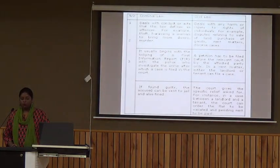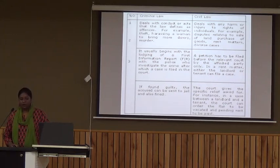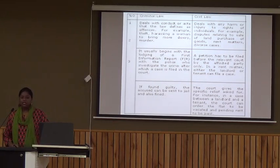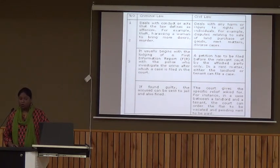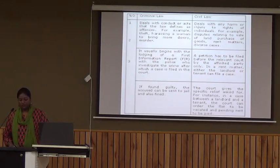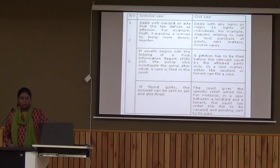In criminal law, the first procedure is to go to the police station, file an FIR, and after lodging the FIR the investigation begins. The police then file a charge sheet in the court, and if the person is found guilty, they will be sent to jail or fined. In civil law, a petition has to be filed before the relevant court by the affected party — for example, in a rent matter, either the landlord or tenant can file a case. Here the role of police begins after the case has been filed in court. The court gives specific relief, such as ordering a flat to be vacated or pending rent to be paid.